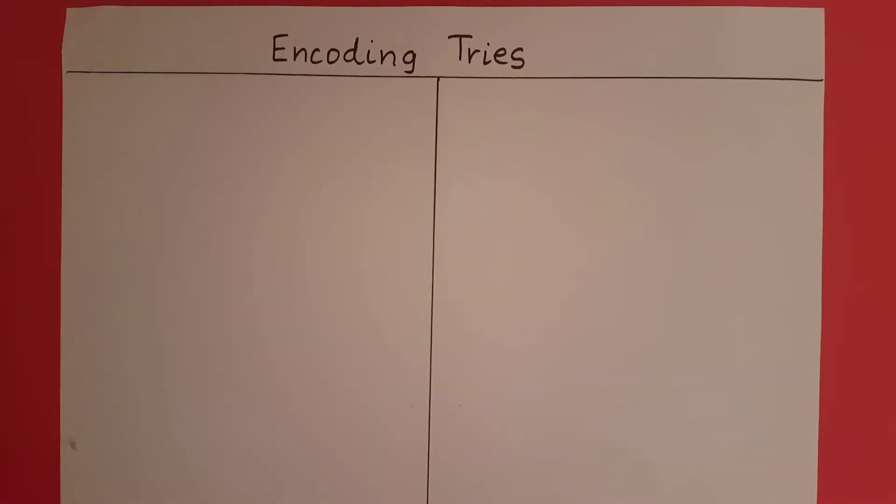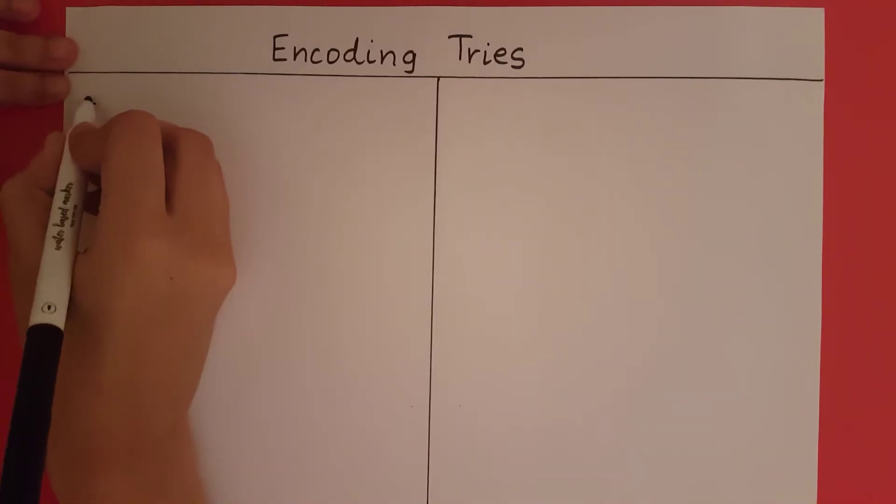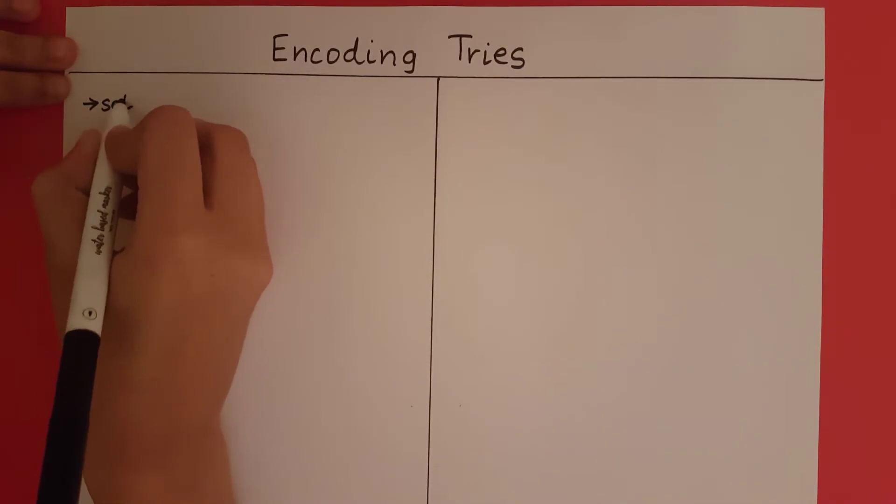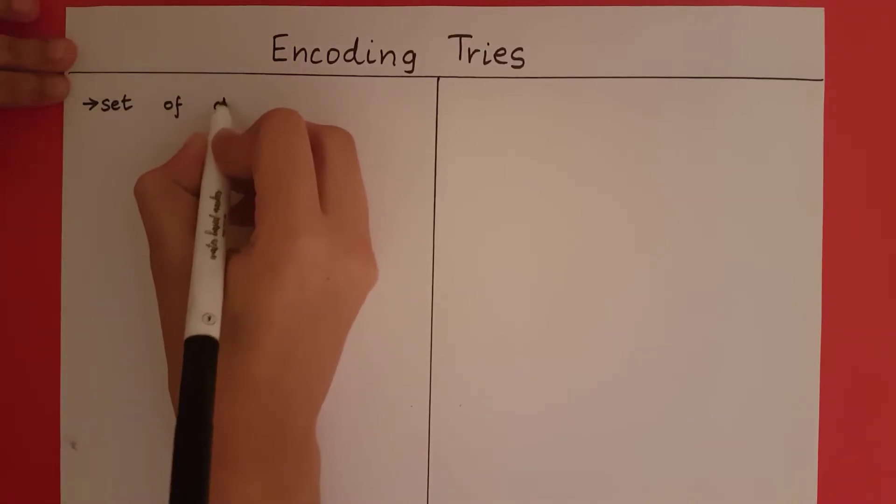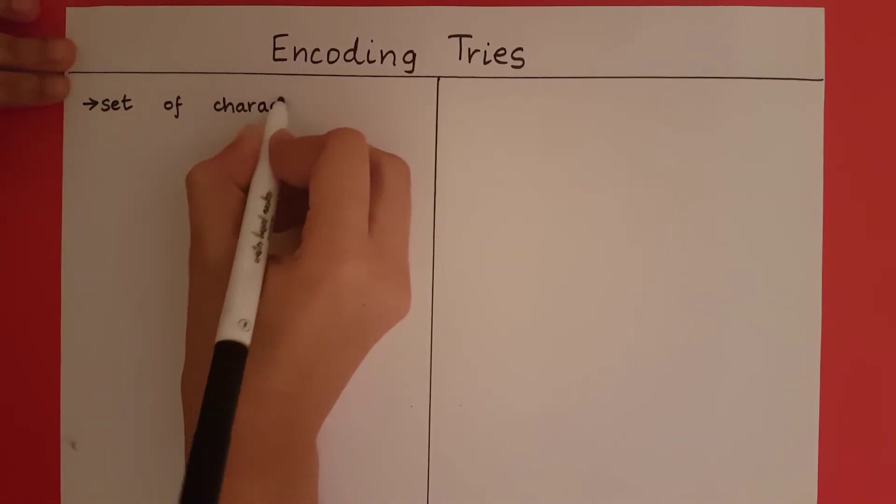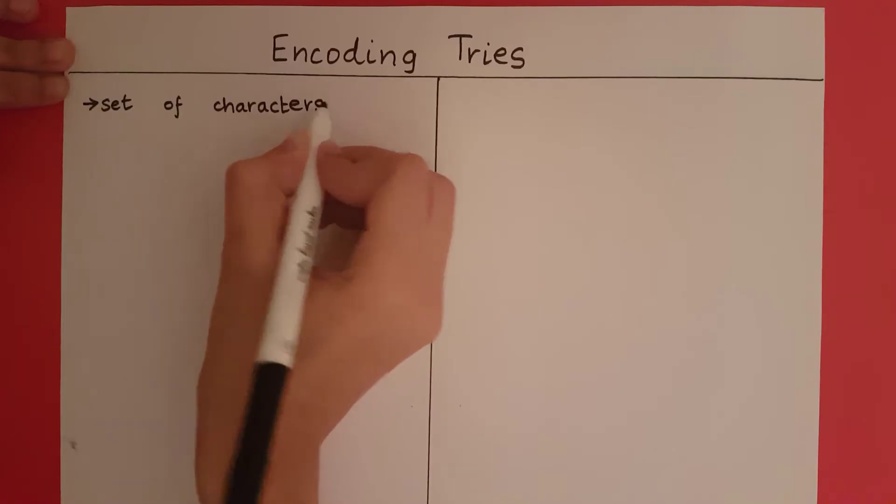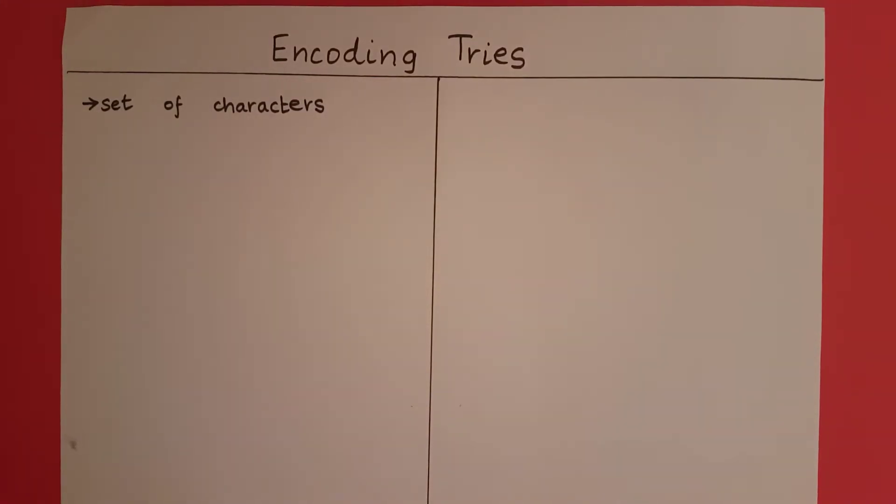Encoding tries. In an encoding trie, I am going to represent a set of characters, and along with each of the characters, I am going to associate a binary string.